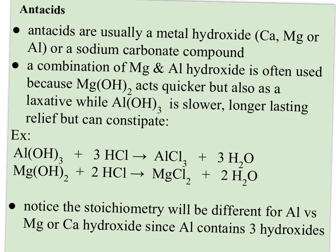So how do antacids work? They're usually a metal hydroxide — like calcium, magnesium, or aluminum hydroxide. You won't see any of the strong hydroxides like barium, lithium, sodium, and potassium, because those would be much too strong for our stomachs to tolerate. Often what's used is a combination of magnesium and aluminum, because magnesium hydroxide acts quicker but also acts as a laxative, while aluminum hydroxide is slower to act but longer-lasting and can relieve constipation. The side effects kind of balance out and you cover a long time frame with both quick and slower-acting relief. Looking at the balanced equations, aluminum can neutralize three moles of HCl for each mole of aluminum hydroxide, whereas magnesium is in a two-to-one ratio. Calcium would also be in a two-to-one ratio, so aluminum is slightly more effective mole for mole.